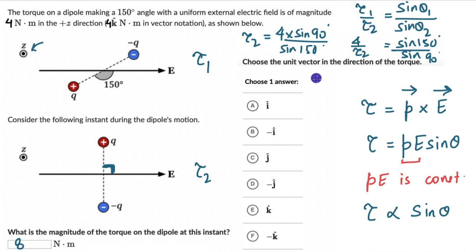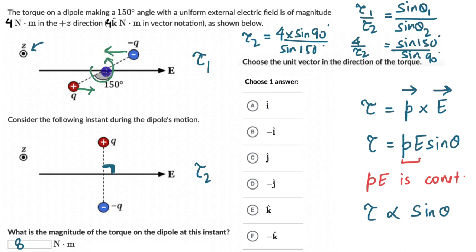Now let's figure out the unit vector — the direction of the torque. Initially, torque acts in the positive z direction. The positive charge experiences a force in the direction of the electric field (to the right), and the negative charge experiences a force opposite to it. These two forces turn the dipole anticlockwise. Using the right-hand rule, curling fingers anticlockwise, the thumb points upward — the positive z direction.